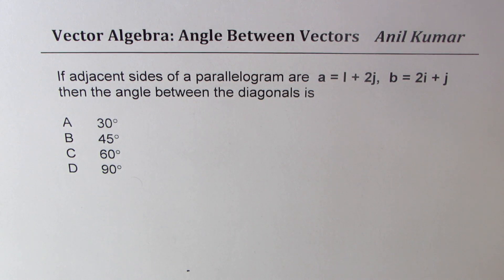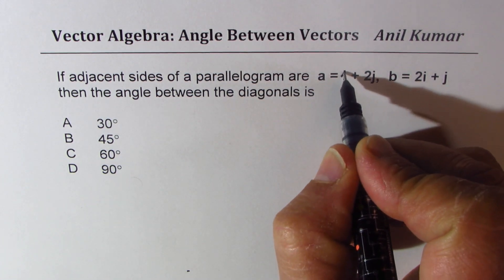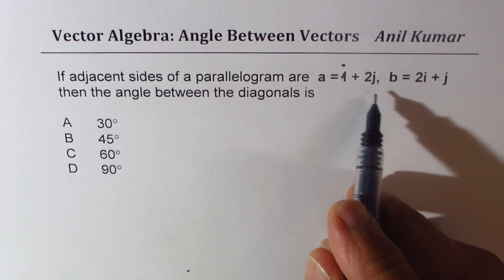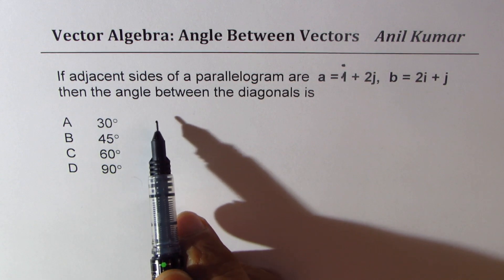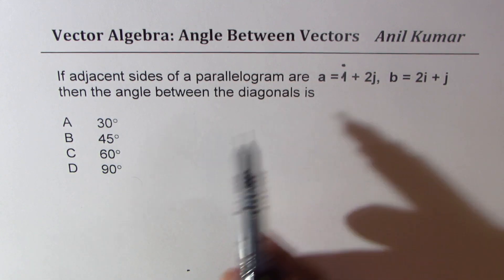The question here is: if adjacent sides of a parallelogram are a = i + 2j, b = 2i + j, then angle between the diagonals is what?